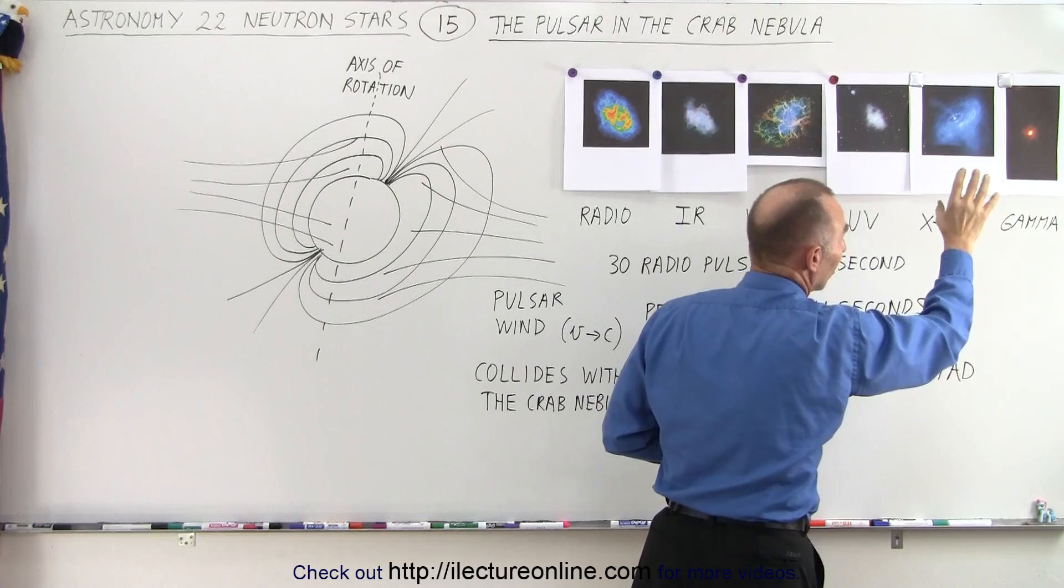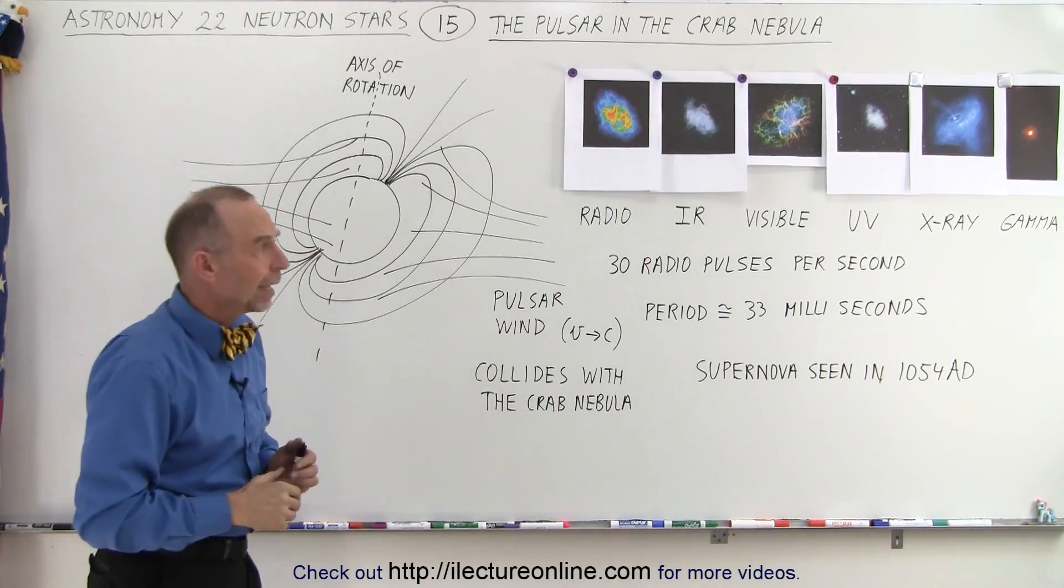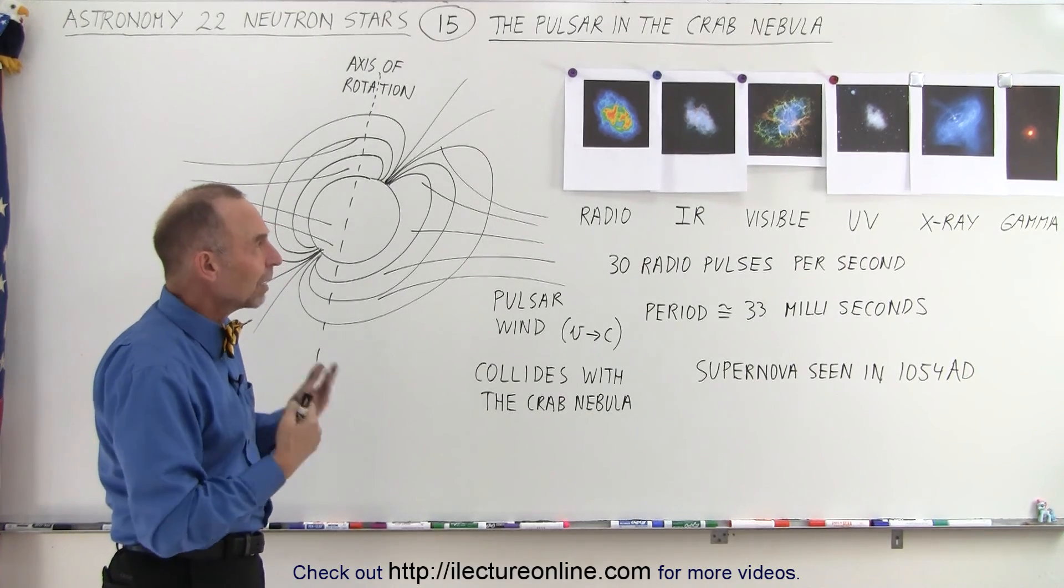Now you actually will see the pulse of the pulsar in gamma rays as well. And so what's interesting is that you see it in all those various wavelengths. Why would that be?